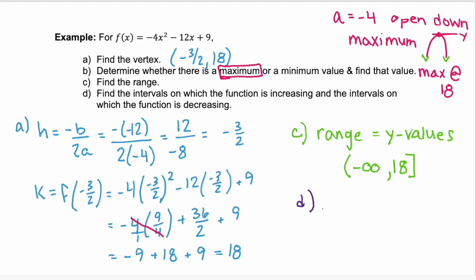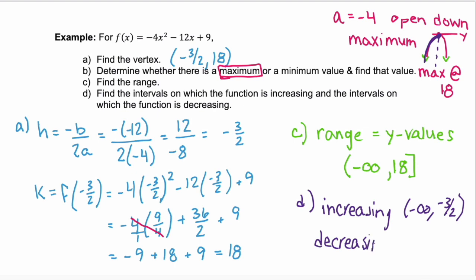Part d wants the intervals on which the function is increasing and decreasing. The graph increases toward the vertex (the maximum), so it's increasing from negative infinity until it reaches the vertex at x = -3/2. Then it decreases from -3/2 through positive infinity. So increasing on (-∞, -3/2) and decreasing on (-3/2, ∞).